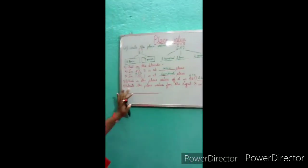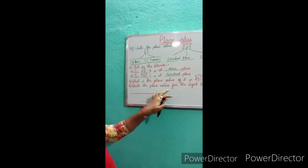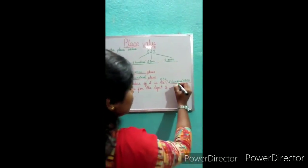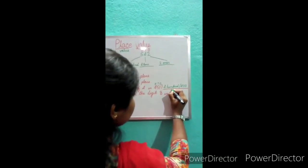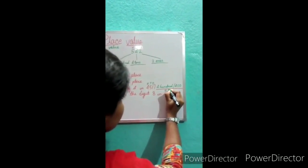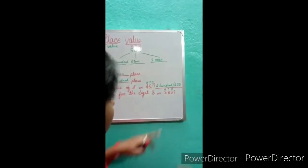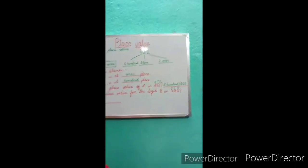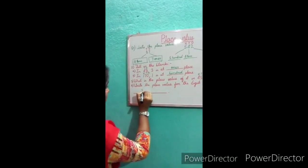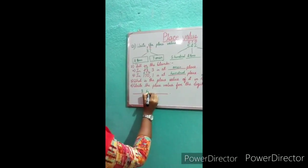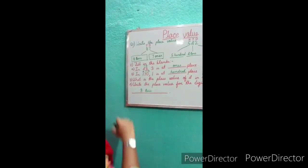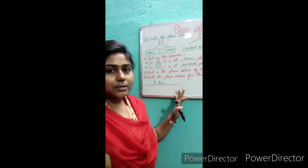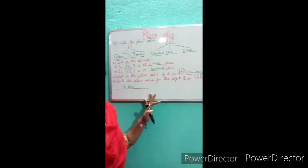Next question: write the place value for the digit 8 in 383. We write the places — hundreds, tens, ones. 8 is at the tens place, so the place value of 8 is 8 tens, or 80. Now like this, we will practice at home.